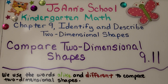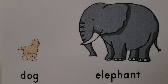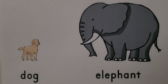Lesson 9.11: Compare two-dimensional shapes. We use the words 'alike' and 'different' to compare two-dimensional shapes. We can compare things by seeing how they're alike — that means how they are the same — or how they're different, which means how they're not the same.